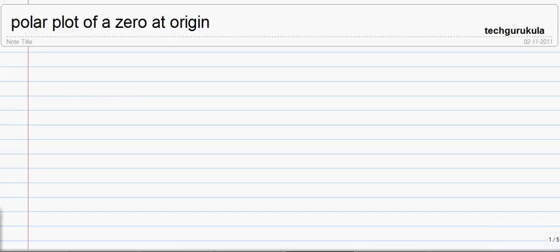In this video, we are going to see polar plot of a zero at origin. And the way we can write this in S form is simply S.